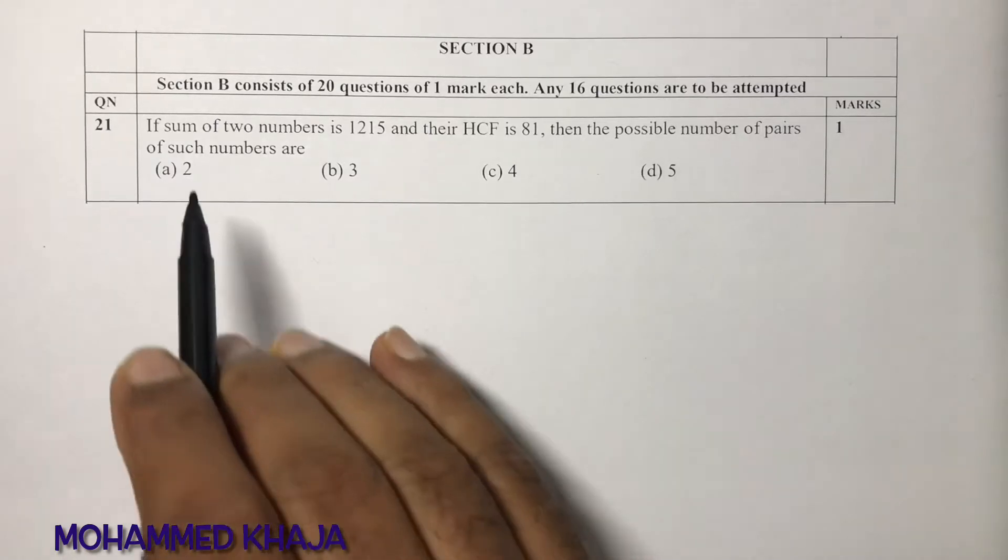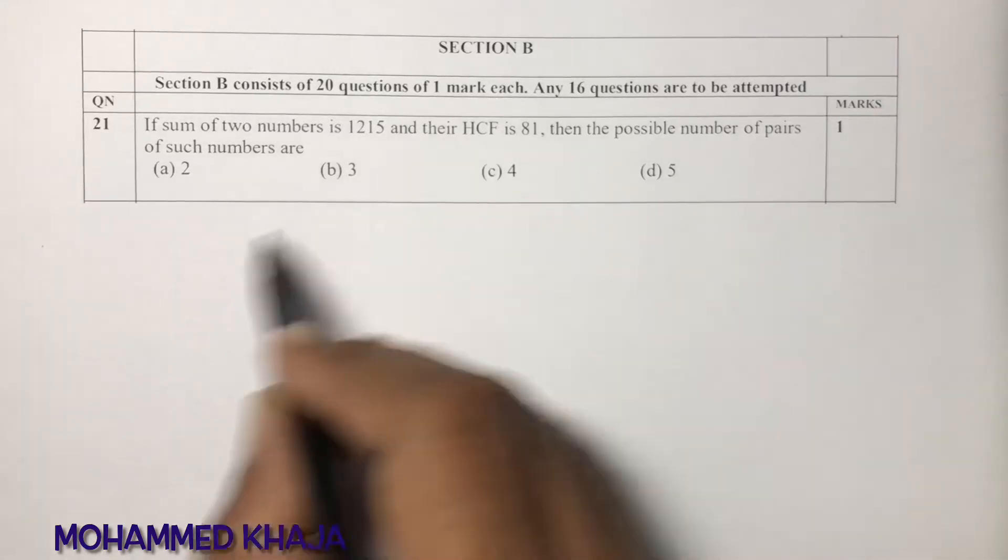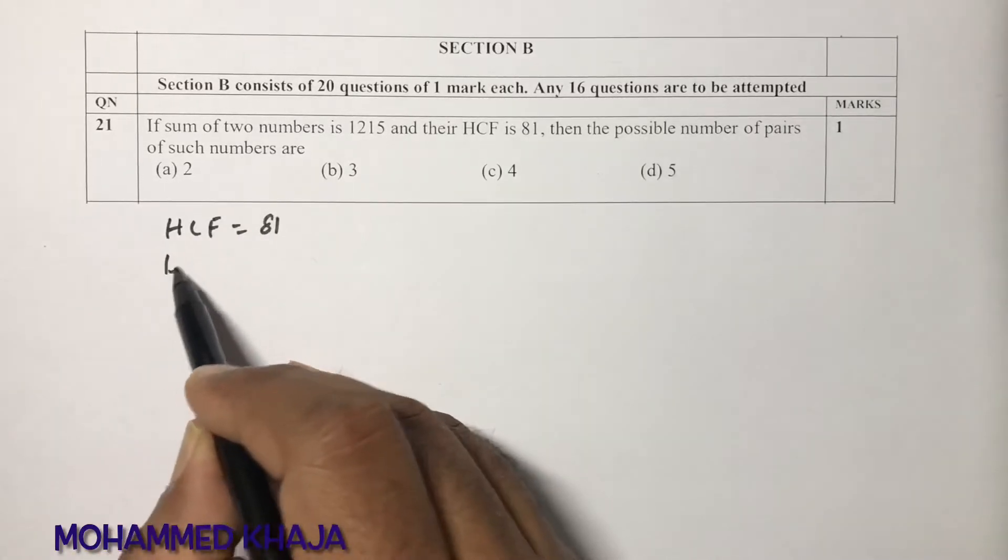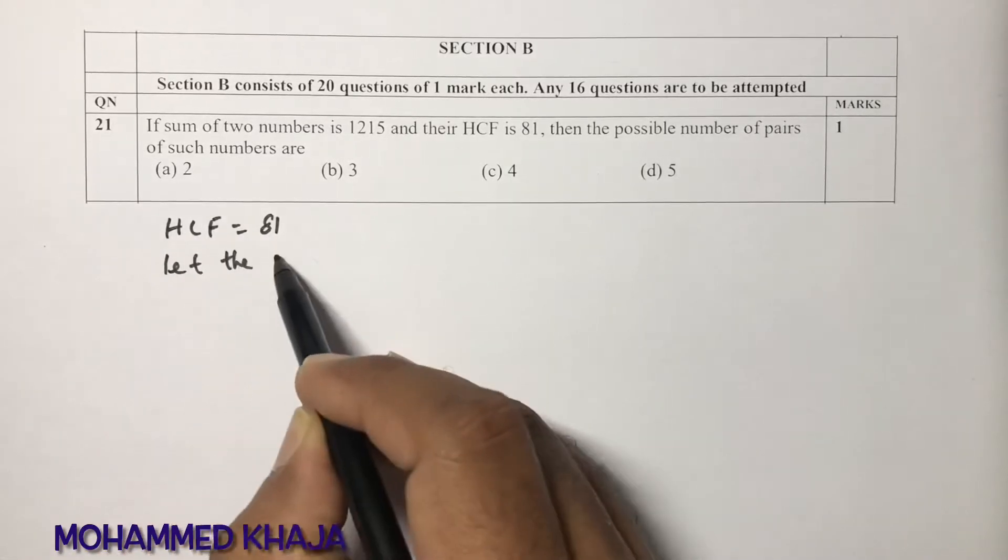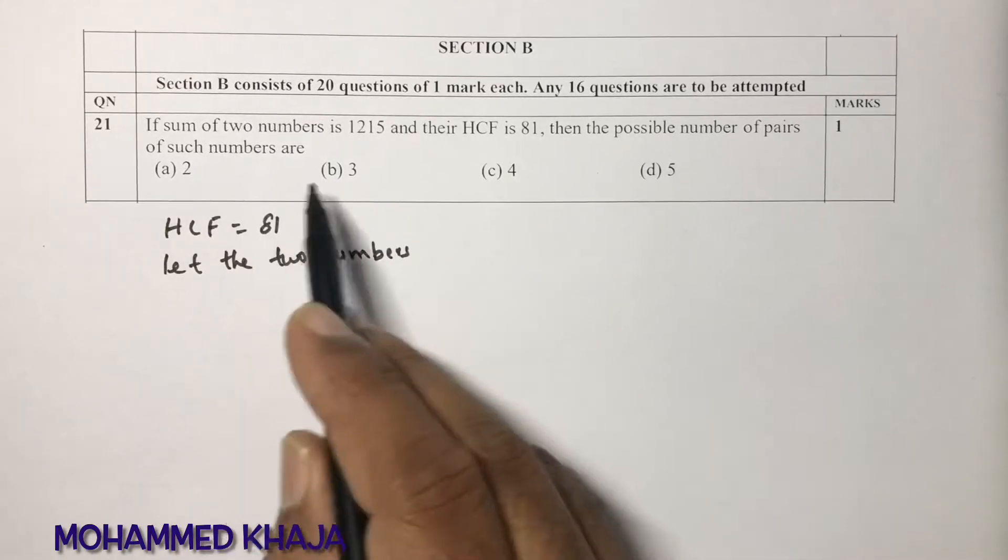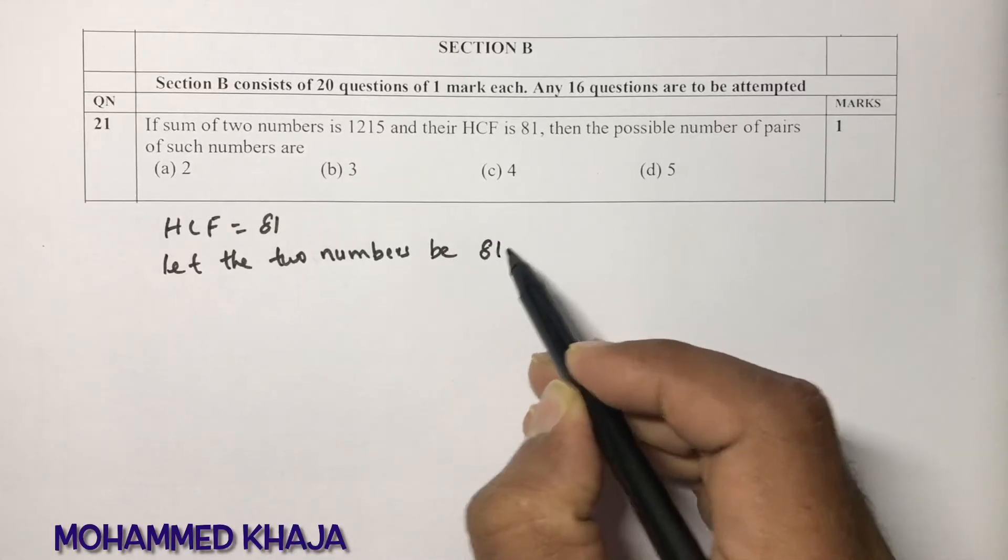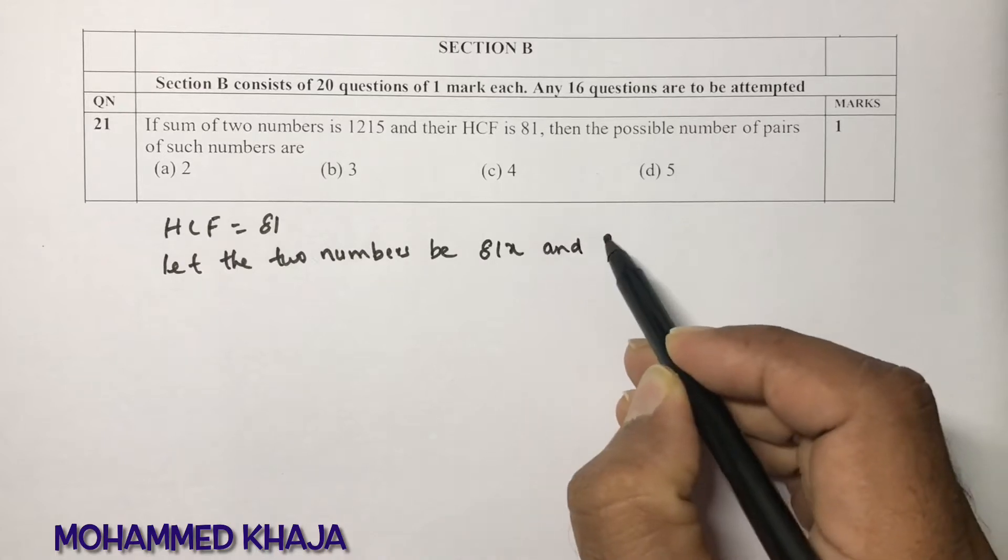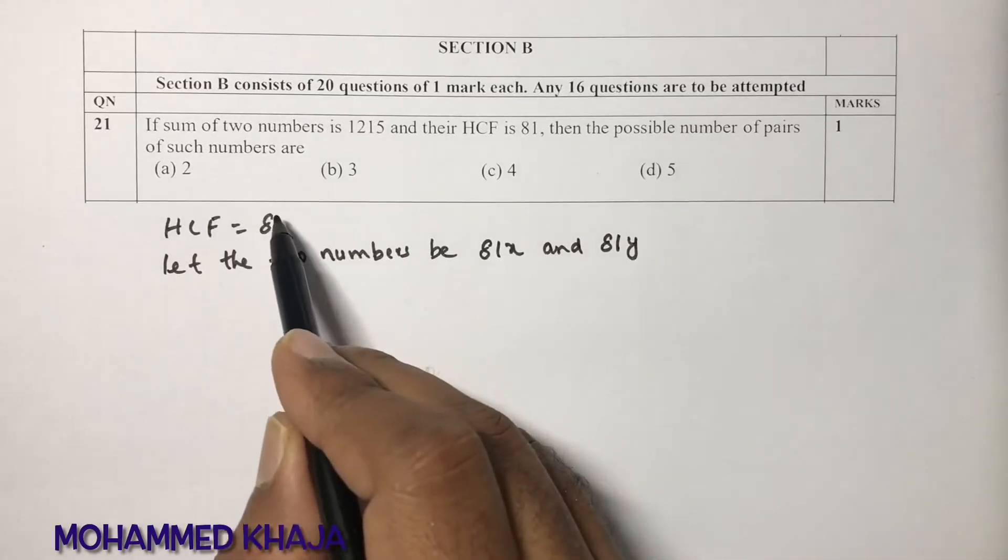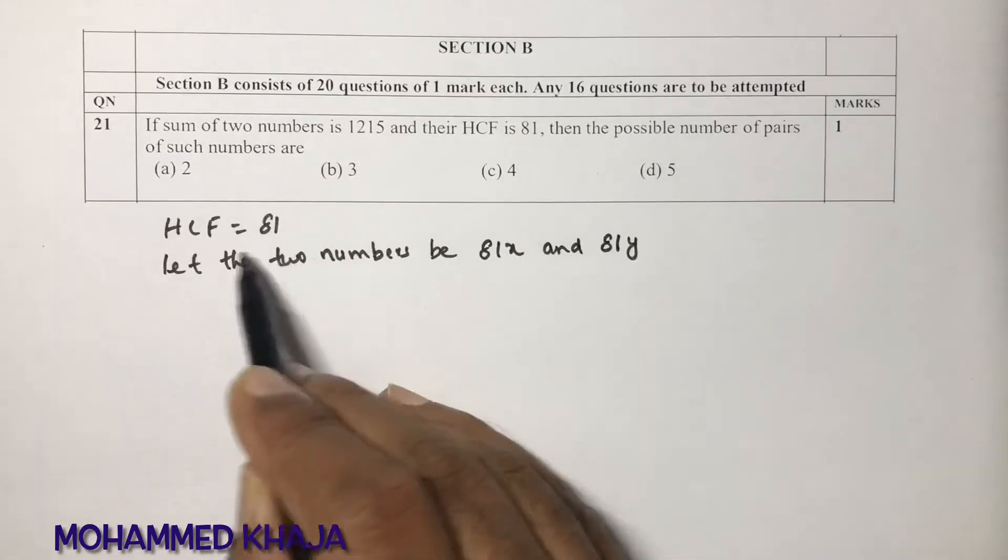So here the sum of two numbers is 1215 and their HCF is 81. Let the two numbers be 81x and 81y because HCF should be a factor of the numbers. From those two numbers only you will get HCF.